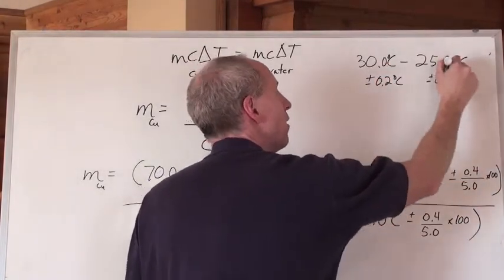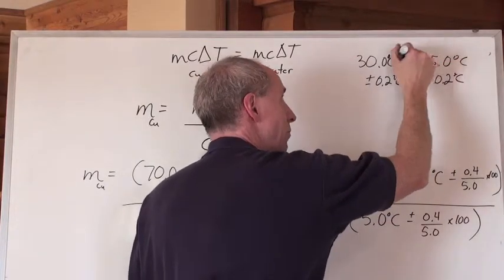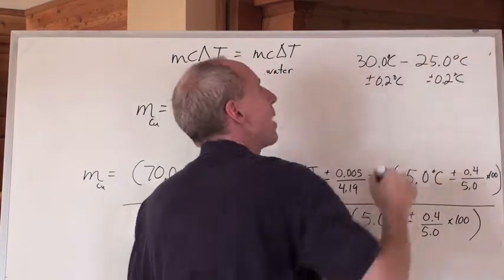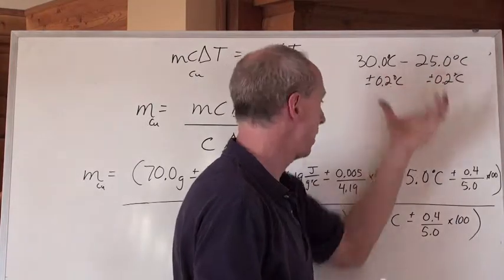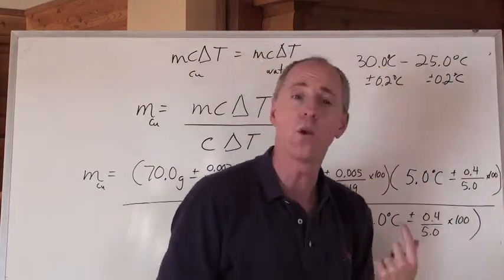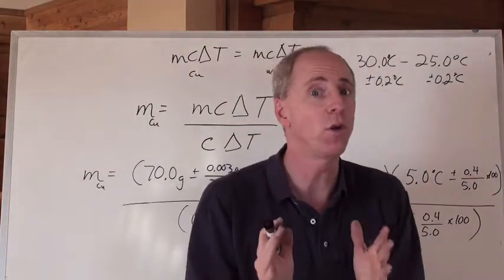And if that's the temperature change for the water, and if it was the temperature change of the copper going from 35 down to 30, then those numbers have to be put in here, and by the way, that's absolute. You have to add them together because you're subtracting here, and therefore that is going to be 5.0 plus or minus 0.4, not 0.2.